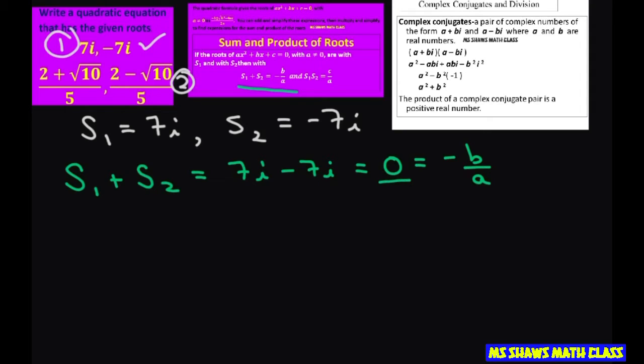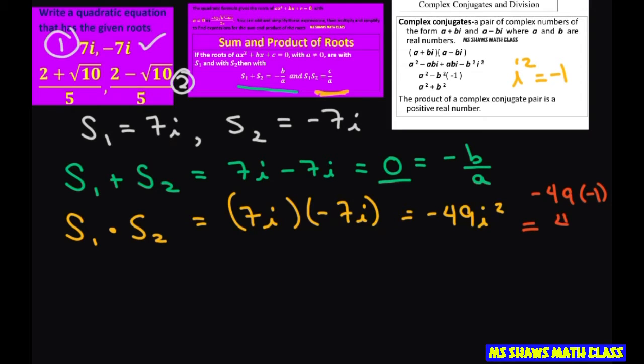We're not sure what our a is yet, so we get our a from this piece. We have to multiply these two. That's going to be 7i times negative 7i, which gives you negative 49i squared. Well, i squared equals negative 1, so this is going to be negative 49 times negative 1. So this just equals 49.